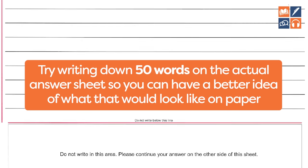The third biggest problem is going over the time limit. For Task 1 you have 20 minutes, for Task 2 you have 40 minutes. Most students do Task 1 first and go over the 20-minute mark. Generally, the more time you spend on Task 1, the worse your score will be — the students who get band eights and nines are always under 20 minutes. Going over time also ruins your chances of a good score in Task 2, which requires at least 40 minutes. In the next section we'll show you how to always finish below 20 minutes.